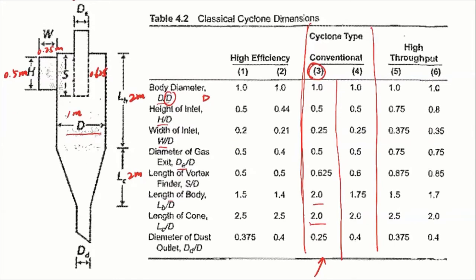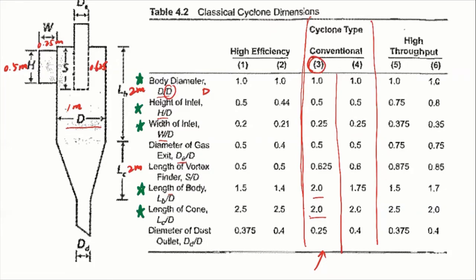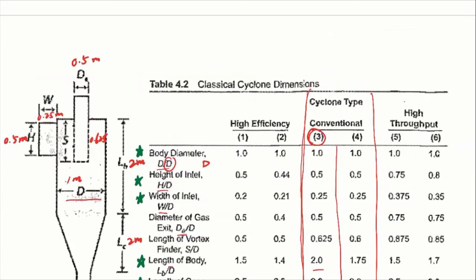When we calculate the efficiency of the cyclone, the most important parameters are the body diameter, height, width, length of the body, and length of the cone. These five parameters will decide the collection efficiency. The other parameters decide construction cost, dimension, or space occupancy of the cyclone.